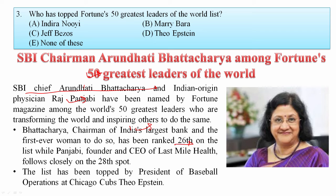Arundhati Bhattacharya is ranked 26th and Raj Punjabi is on the 28th spot. He is the CEO of Last Mile Health — a platform providing medical facilities to villages far from medical infrastructure. This list is topped by the President of Baseball Operations at the Chicago Cubs, Theo Epstein. So your answer is D.